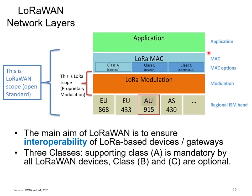LoRaWAN is a connectivity layer, not an application. The application sits on top of it — similar to how a browser is the application on your phone while 4G is the connectivity. In connectivity there are two layers: the MAC layer, or Media Access Control, which defines when to start and stop transmitting, how many bits to send, and required overhead information; and the physical layer, which defines how to modulate — how zeros and ones are transmitted over the air. It also defines regional parameters such as radio channel allocations, which vary by country.